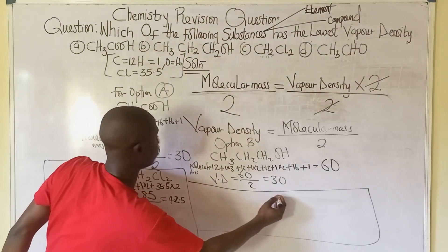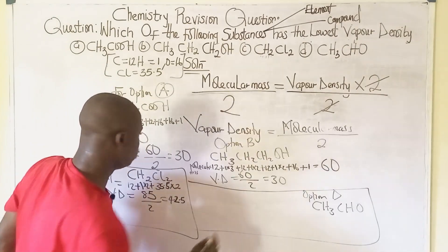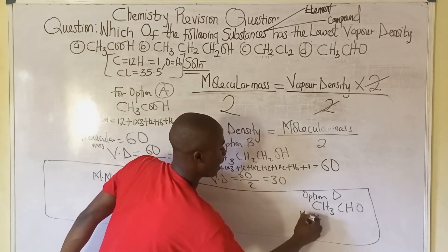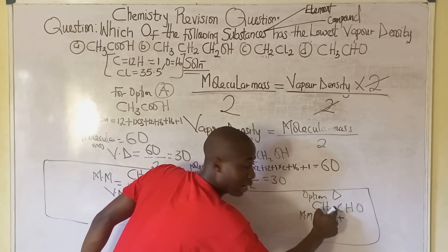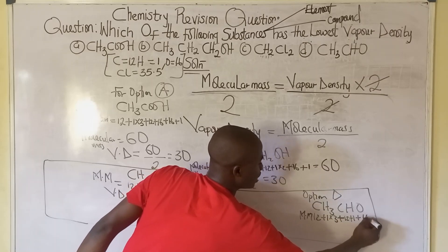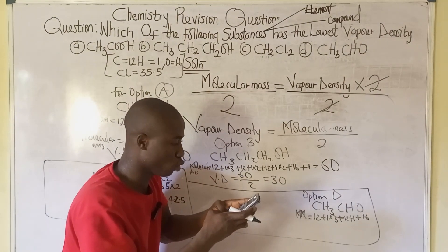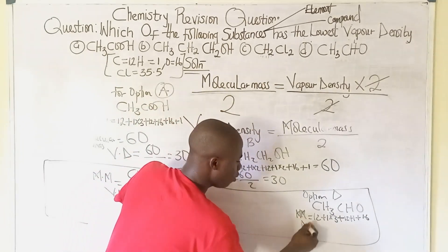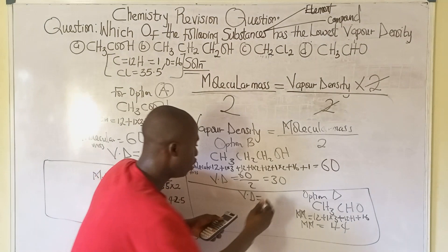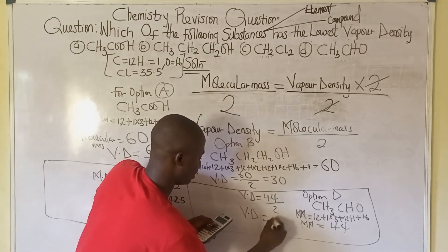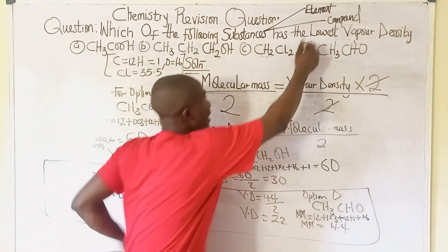For option D, the compound is CH₃CHO. The molecular mass is: 12 + (1×3) + 12 + 1 + 16 = 44. So the molecular mass is 44. The vapor density is 44 ÷ 2 = 22. After solving the vapor densities of all the options, option D has the lowest value of 22.